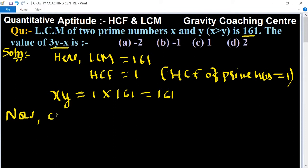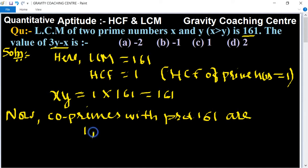Now, co-primes with product 161 are (1, 161) and (7, 23).